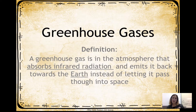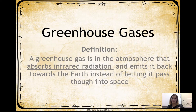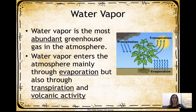Now, greenhouse gases. A greenhouse gas is a gas in the atmosphere that absorbs infrared radiation from the sun and emits it back towards the Earth instead of letting it pass through into space. Instead of reflecting off, these greenhouse gases absorb as much radiation as possible, creating a cloud-like effect over the Earth that causes warming inside.